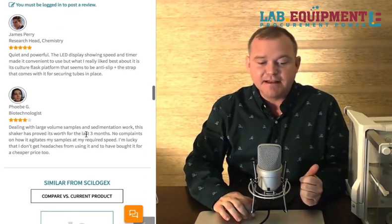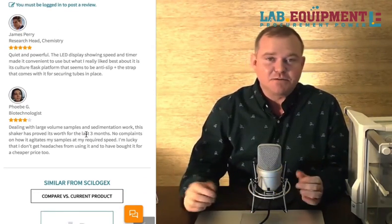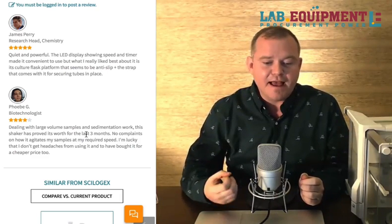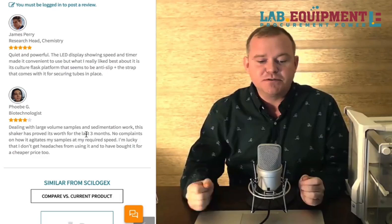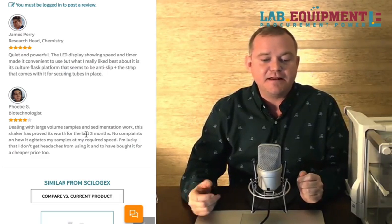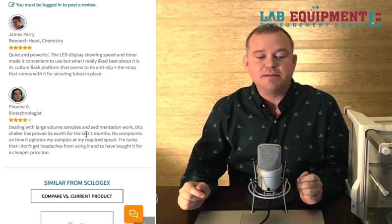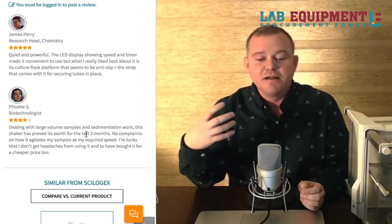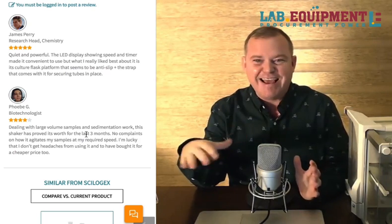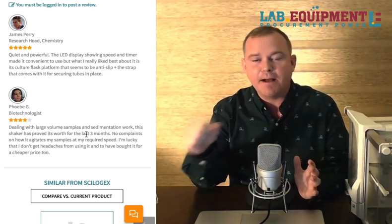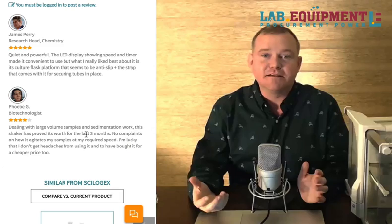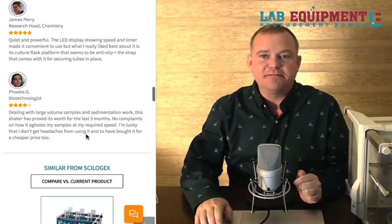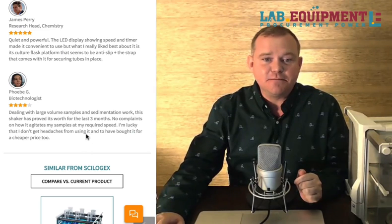James gave it five stars. He said it's quiet and powerful, relative to the other shakers that you have in your lab. The LED display shows speed and timer made it convenient to use, but what he really liked best about it is how secure the samples fit on there. The culture flask platform has an anti-slip surface and a strap that comes with it for holding the tubes securely in place.